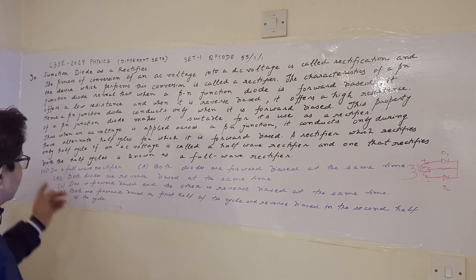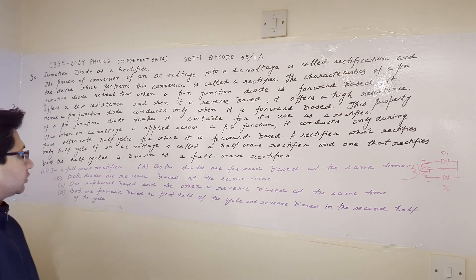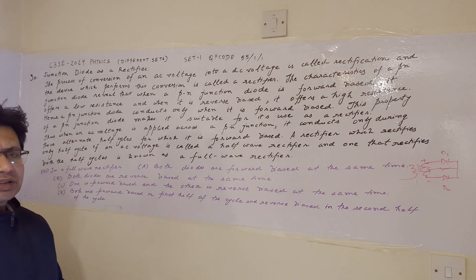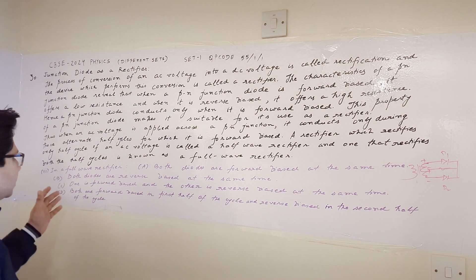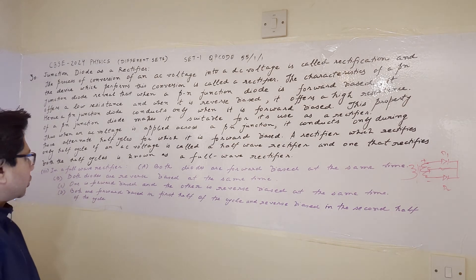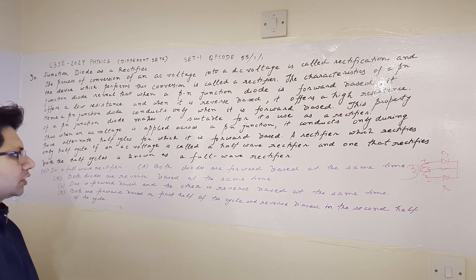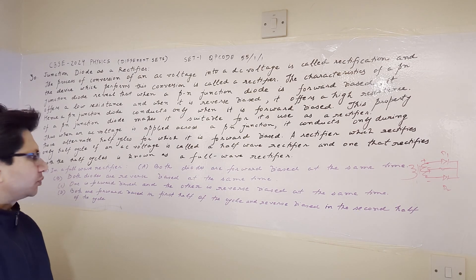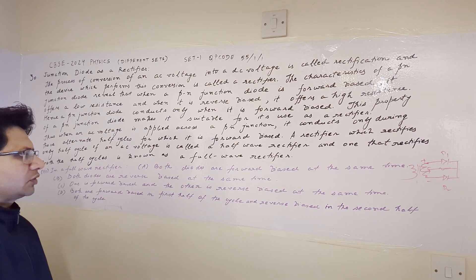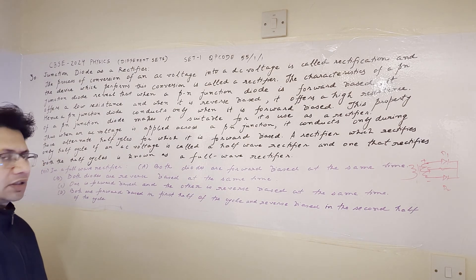The third question based on this case study is: in a full wave rectifier — option A: both diodes are forward biased at the same time, option B: both diodes are reverse biased at the same time, option C: one is forward biased and the other is reverse biased at the same time, option D: both are forward biased in the first half cycle and reverse biased in the second half of the cycle.